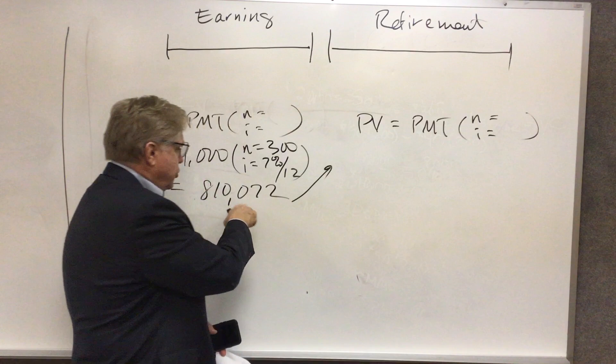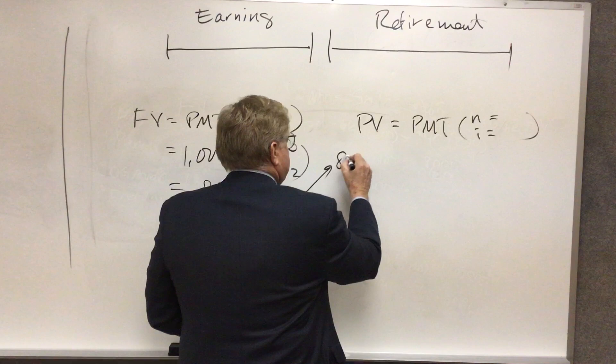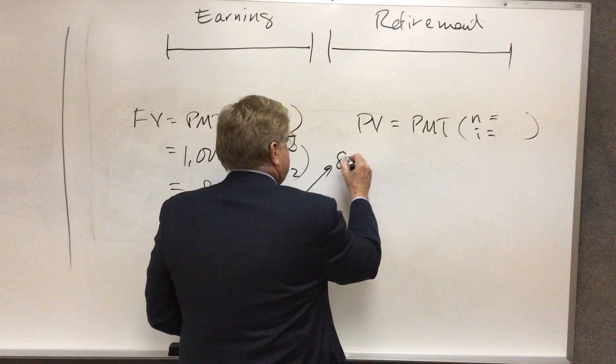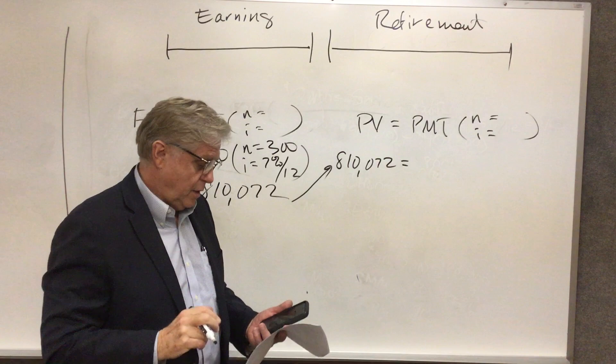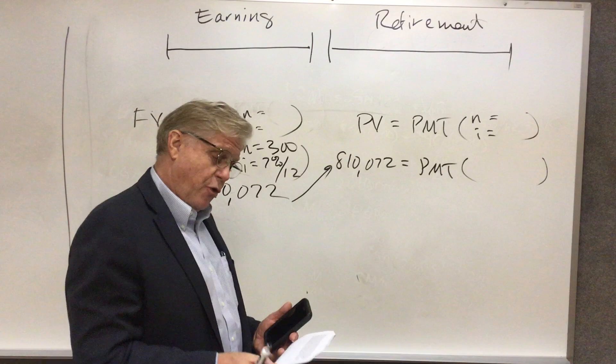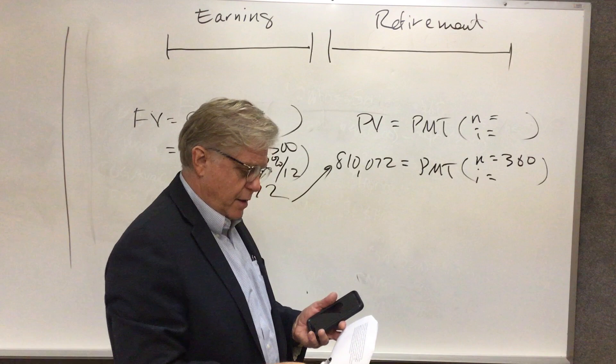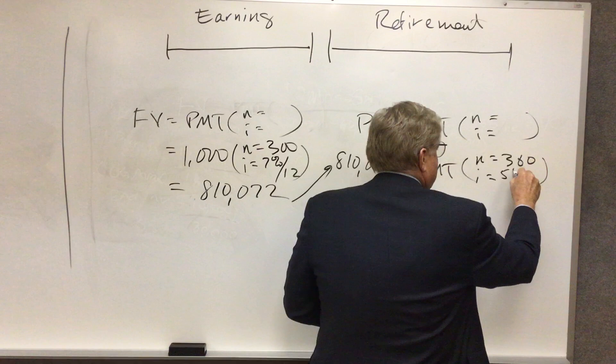Now, what she ends her earning years with, that is on retirement date, she's got $810,072 in her account. That becomes the present value of her retirement annuity. And here we want to solve for the amount that she can withdraw. So payment is our unknown here. She's planning to withdraw monthly for 30 years of retirement: 30 times 12, N is 360. And you'll note here that the rate of return during retirement is 5%, so 5% divided by 12. And when we solve for payment...